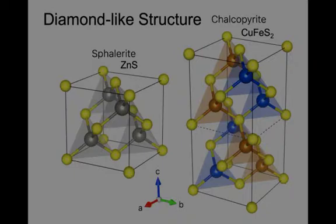On the left, you can see the dark gray is zinc, and the yellow is sulfur. Each one of those is in tetrahedral coordination, and the zinc-sulfur bond is shown here. They align as a face-centered cubic crystallography.